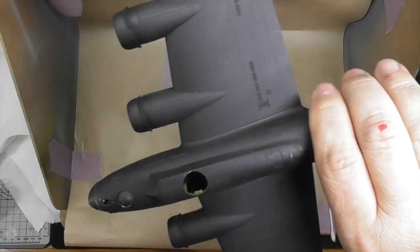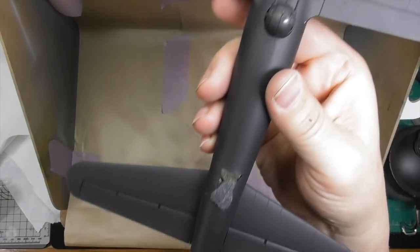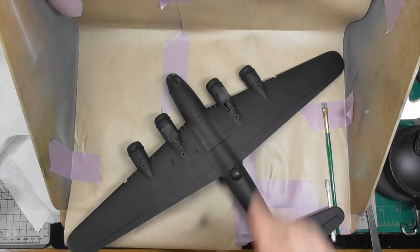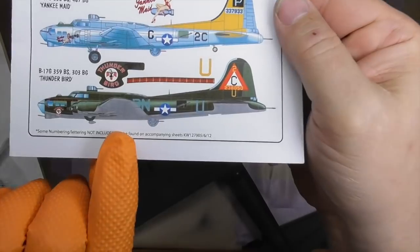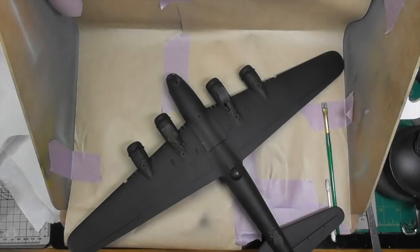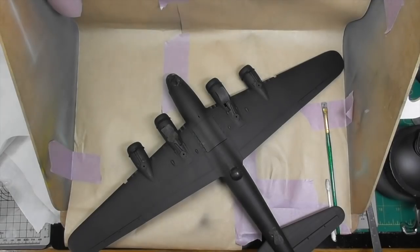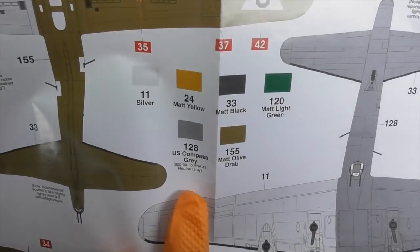Last time we talked about the engines and cowlings. They're temporarily mounted on, and we're repainting the bottom. I'm building Thunderbird, which you can see is green over gray, olive drab over gray. According to the Airfix instructions, the gray part is compass gray slash neutral gray.